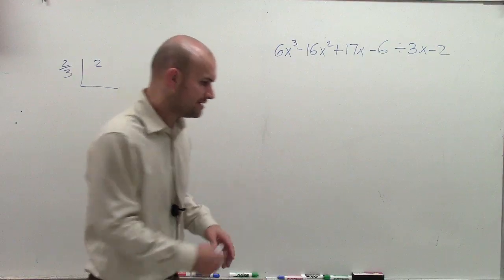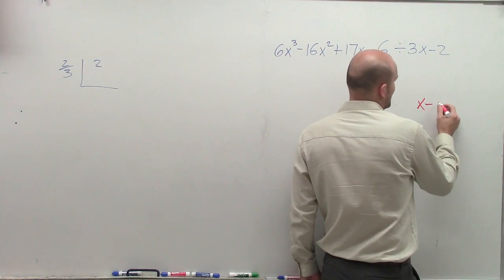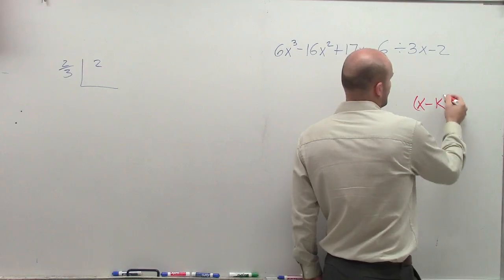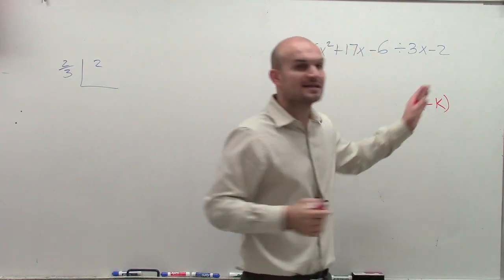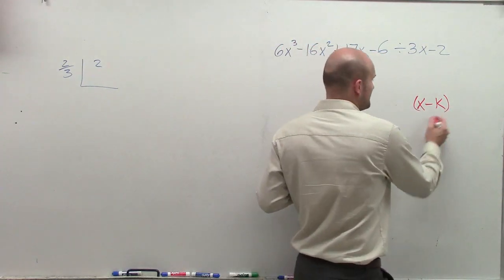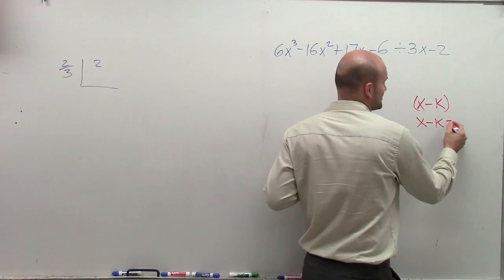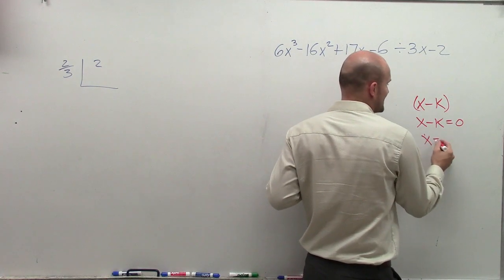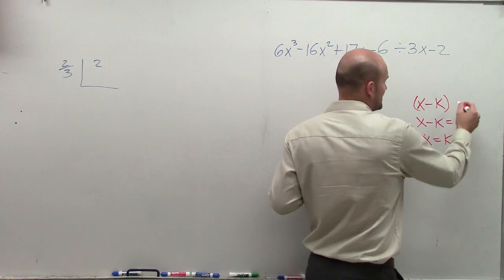Now, here comes the thing. When we're talking about factors, we said x minus k was your factor. Well, if x minus k is my factor, then remember you've set your factors equal to zero, and you could say x equals k is my zero.